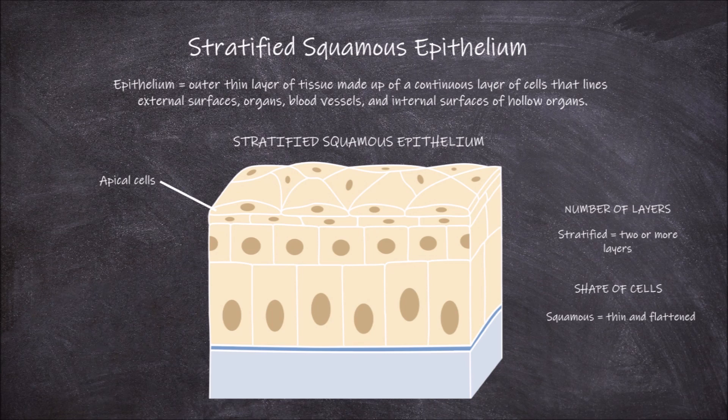Only one layer, the lowest layer, known as the basal cells, sits on the basement membrane. These basal cells divide, replacing the cells above them as the ones at the top get sloughed off or die.